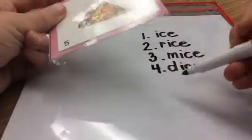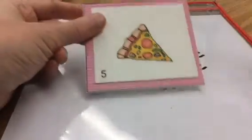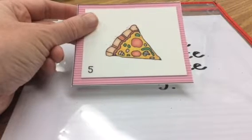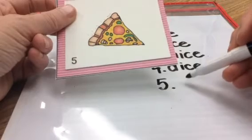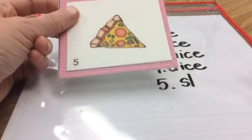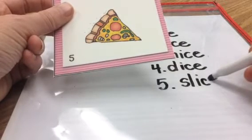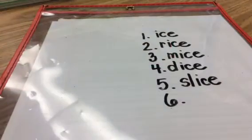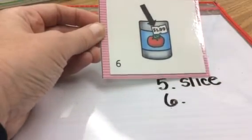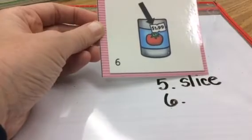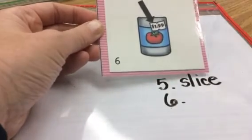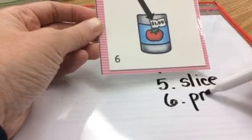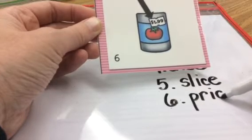Number five: slice. Be careful here — make sure you get that blend. Slice. SL is S-L, and then we have ice — slice. Number six: let's write the word price. P-R-ice. We have a blend at the beginning: P-R. I hear two consonants that make the P-R sound. P-R-ice — price.